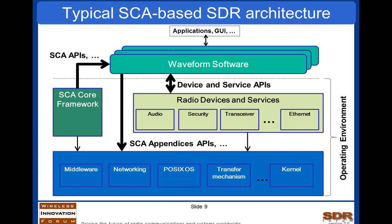Other services include POSIX operating systems and access to the kernel, which lightweight profiles enable — key especially for general purpose processors and DSPs — allowing software components to correctly execute. All those things in the blue rectangle are the standardized items that each platform needs to provide for the sake of correctly executing the waveform software, delivering technical services that help the waveform software to execute.